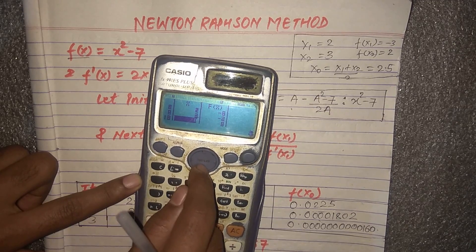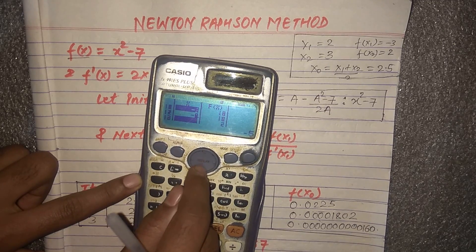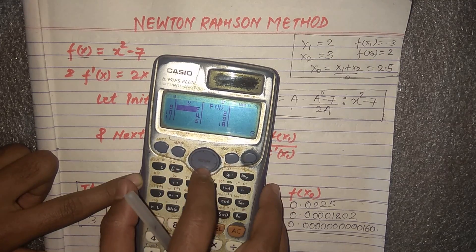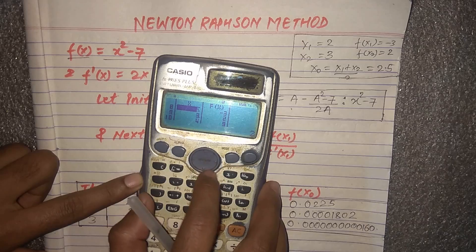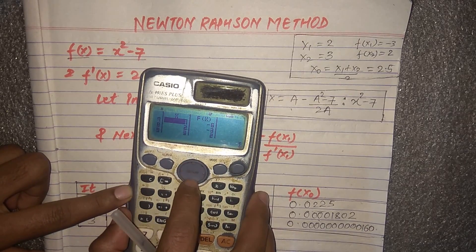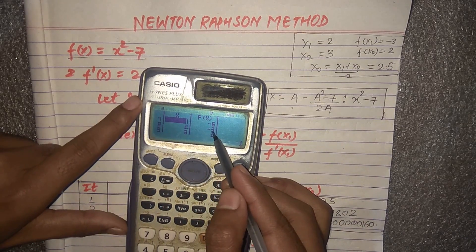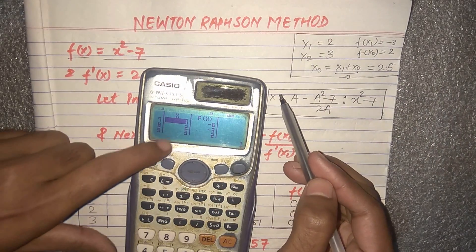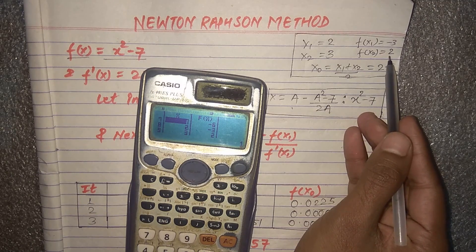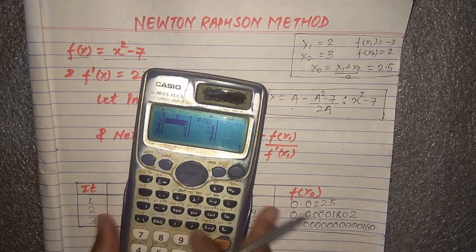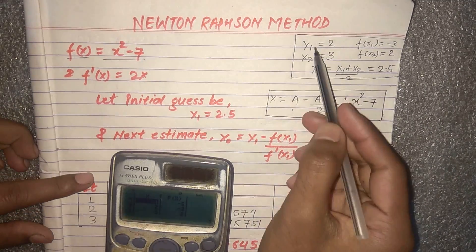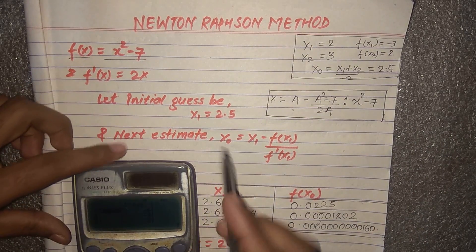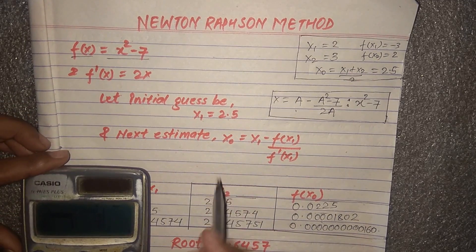At x = 2 we have f(x) = -3, and at x = 3 we have f(x) = positive. We'll choose only one initial guess, so we'll take the average of these two values: x₁ = (2 + 3)/2 = 2.5. So our initial guess will be x₁ = 2.5.